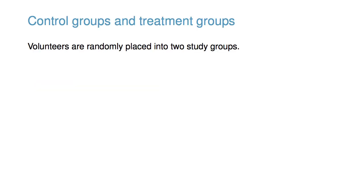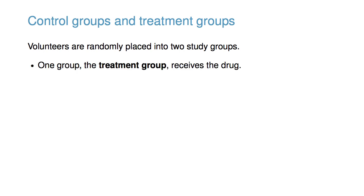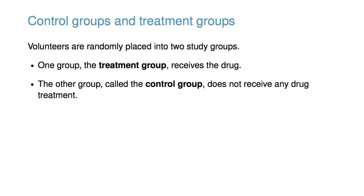Consider the common experiment to test whether a particular pill is effective at treating a specific medical condition. In such experiments, volunteers are randomly placed into two study groups. One group, the treatment group, receives the drug, and the other group, called the control group, does not receive any drug treatment, though they may receive a placebo. The most basic analysis is then to compare the outcomes of volunteers in the control group to those in the treatment group.